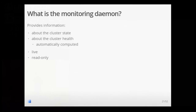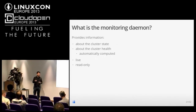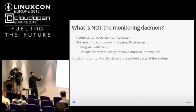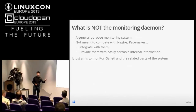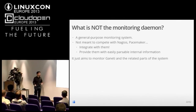The idea of the monitoring daemon is to provide information about the cluster state and health. This information can be computed automatically by the daemon and will tell you whether some instance is running correctly, exported in an easily parsable format. The idea is to have this information live and read-only, but we don't want to write a general-purpose monitoring system — we don't want to compete with Nagios or Pacemaker. We just want to integrate with them, providing easily parsable information about the internal parts of Ganeti that Nagios or Pacemaker wouldn't really be able to find out on their own.